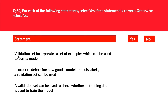Statement 1 says a validation set incorporates a set of examples which can be used to train a model. A validation set is different from a training set, so the answer is no. Statement 2 says in order to determine how good a model predicts labels, a validation set can be used. Since a validation set is used to validate the model, the answer is yes — that's what a validation set does.